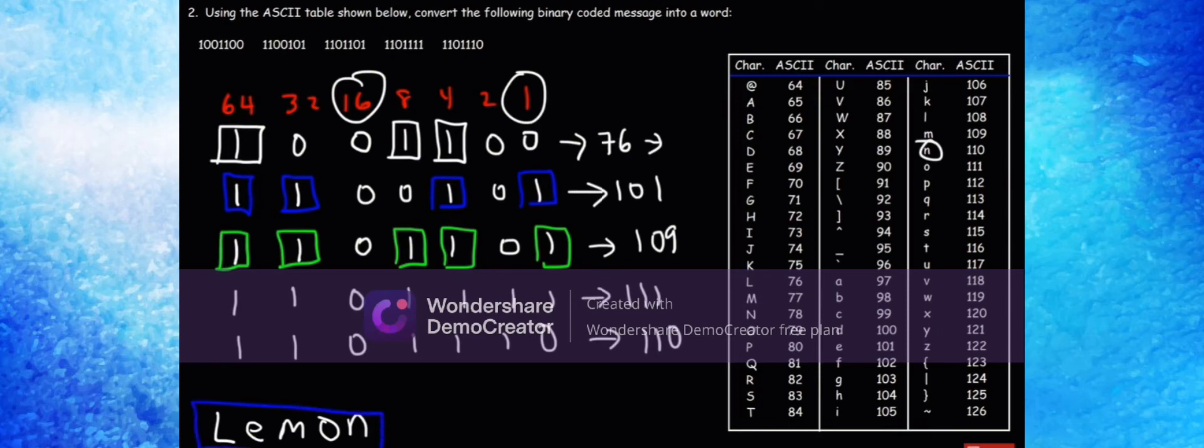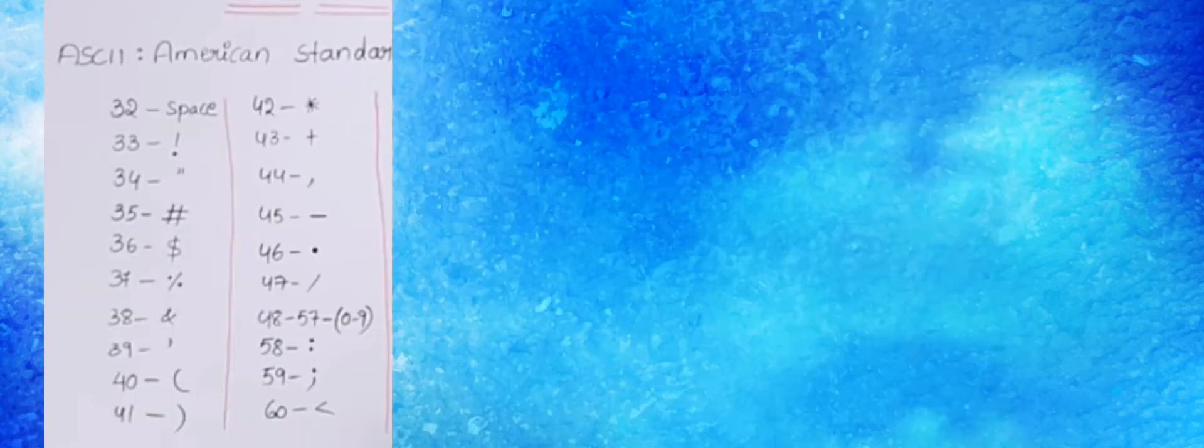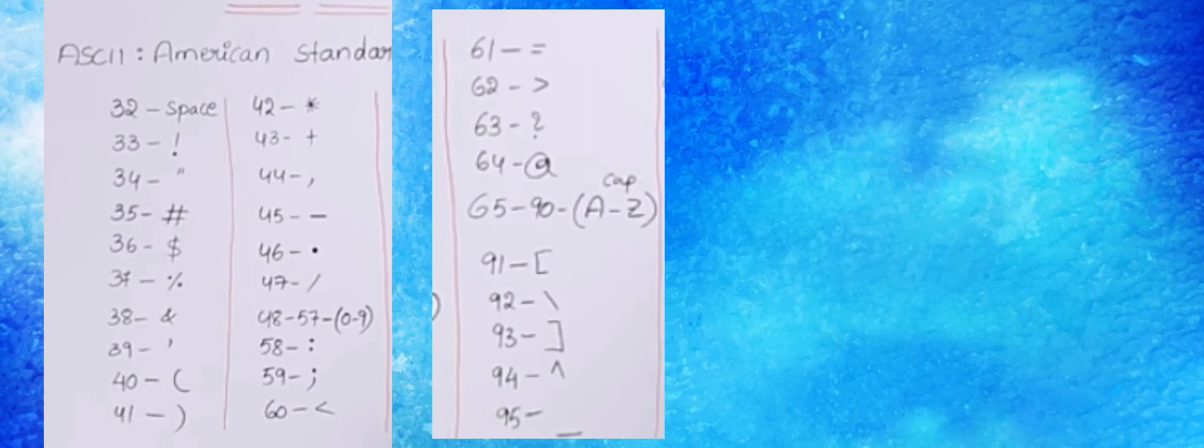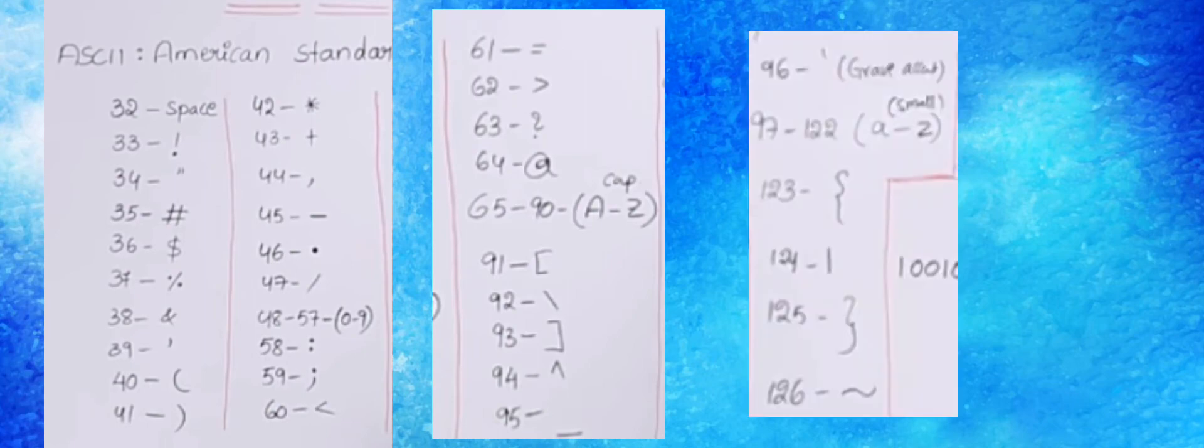Now you know how to use the ASCII table and convert between ASCII code and binary code. These are the special characters: ASCII code 32 is space, 33 is exclamation mark, 34 is double quotes, 35 is number sign, 36 is dollar sign, 37 is percent sign, 38 is ampersand, 39 is single quote or apostrophe, 40 is round brackets or parenthesis, 41 is parenthesis, 42 is asterisk, 43 is plus sign, 44 is comma, 45 is hyphen or minus sign, 46 is dot or full stop, 47 is slash or forward slash or fraction bar.